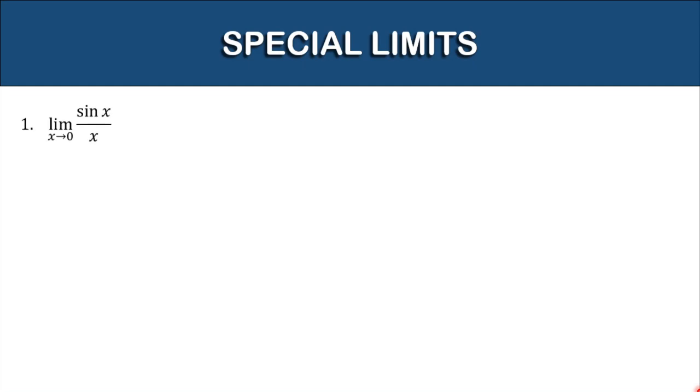If the denominator is zero, we need to think of possible ways to find the limit of the problem. But in our topic for this video, there are special functions where the limits still exist even when the denominator is approaching zero. Let's have our number one: the limit of sine x over x as x approaches zero.